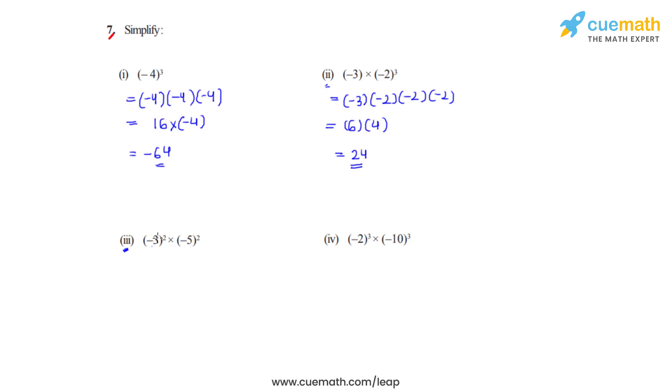Third bit has negative 3 raised to 2, that is negative 3's square which is 9, times negative 5's square which is 25, and then when we find their product we get the answer as 225.